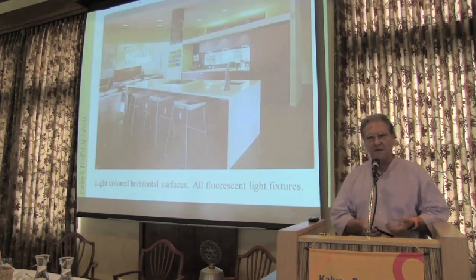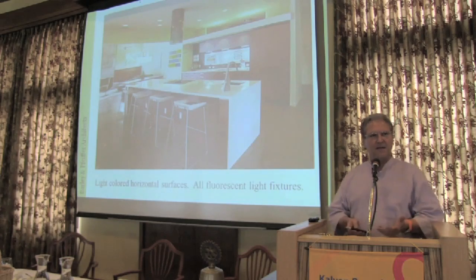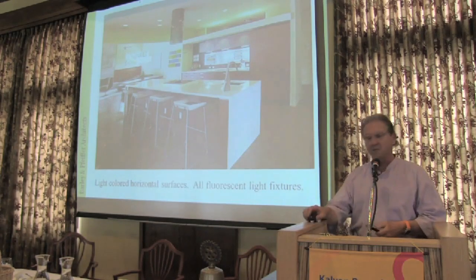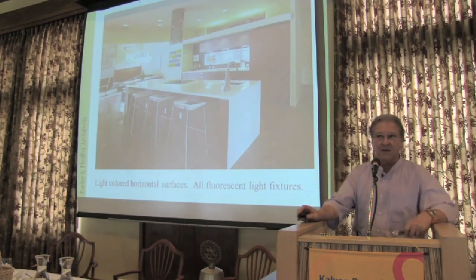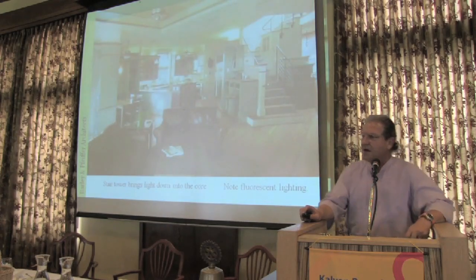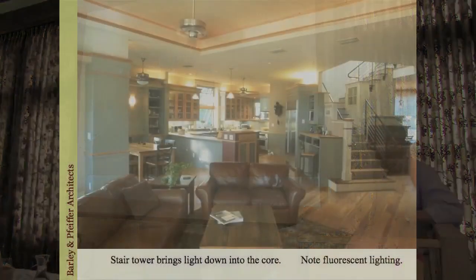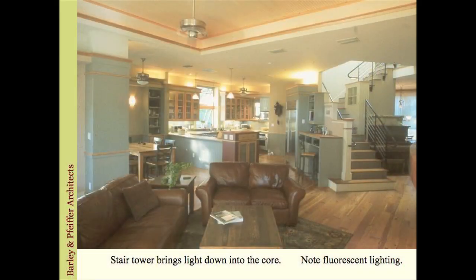Don't do dark countertops — especially as we get older, it's tougher for those of us whose eyes are deteriorating to see things against a dark surface. Always do light-colored countertops: you'll also produce less heat in the kitchen and save a lot of energy. It doesn't have to be a particularly contemporary kitchen — ours uses all fluorescent lights, it's a very warm-looking kitchen but with very low-wattage fluorescents.